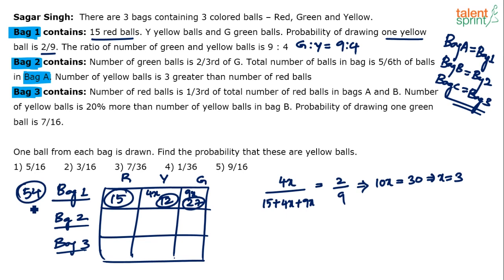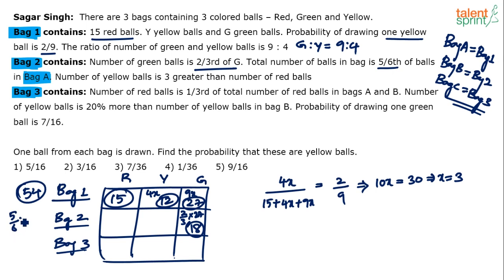For bag two: green balls = two-thirds of g = two-thirds of 27 = 18. Total balls in bag two = five-sixths of 54 = 45. Since green balls are 18, remaining red plus yellow = 45 − 18 = 27. Also, yellow is 3 more than red, so yellow = r + 3.